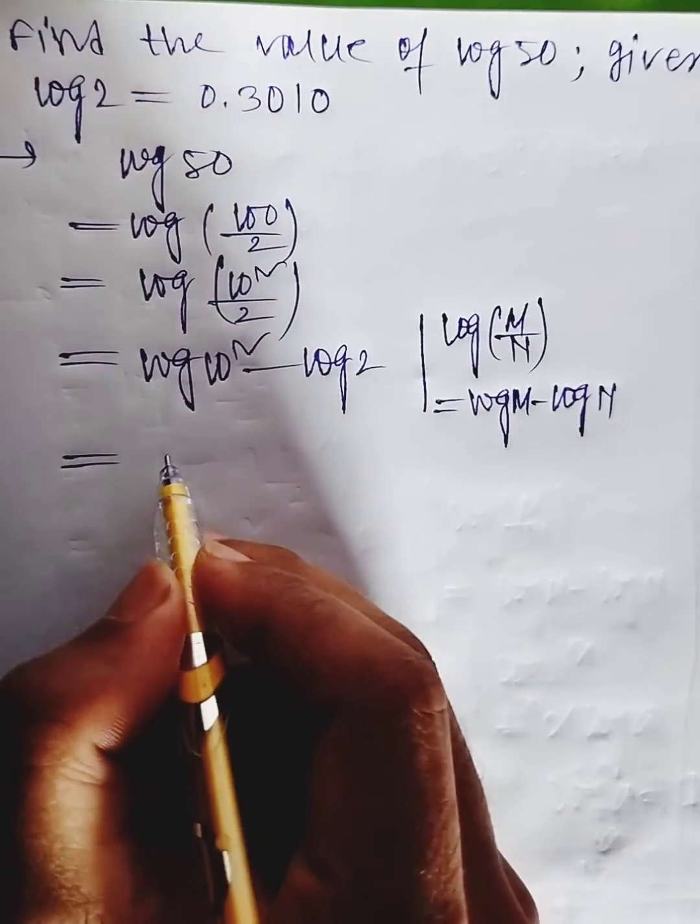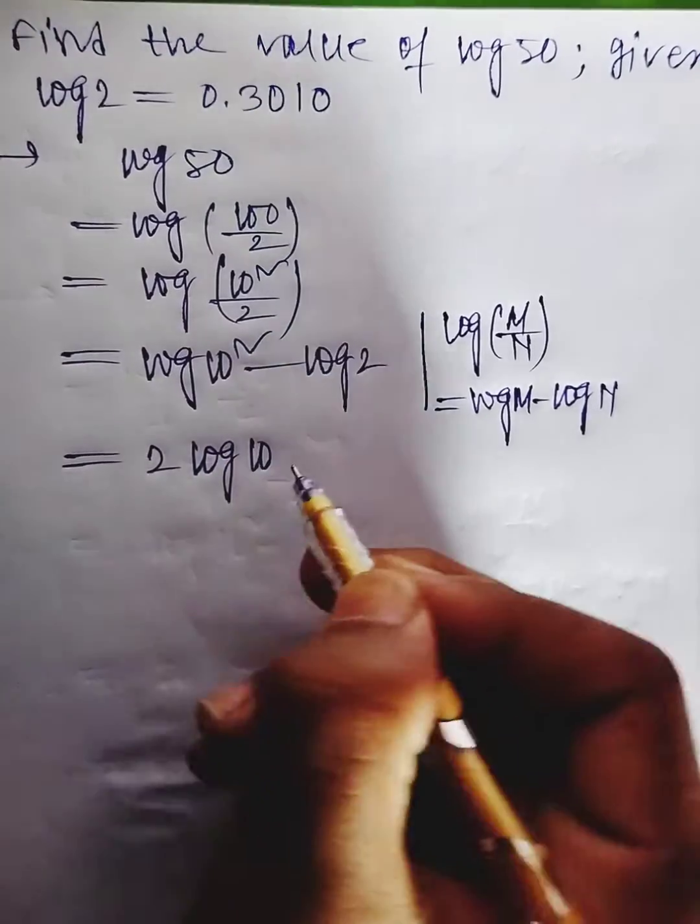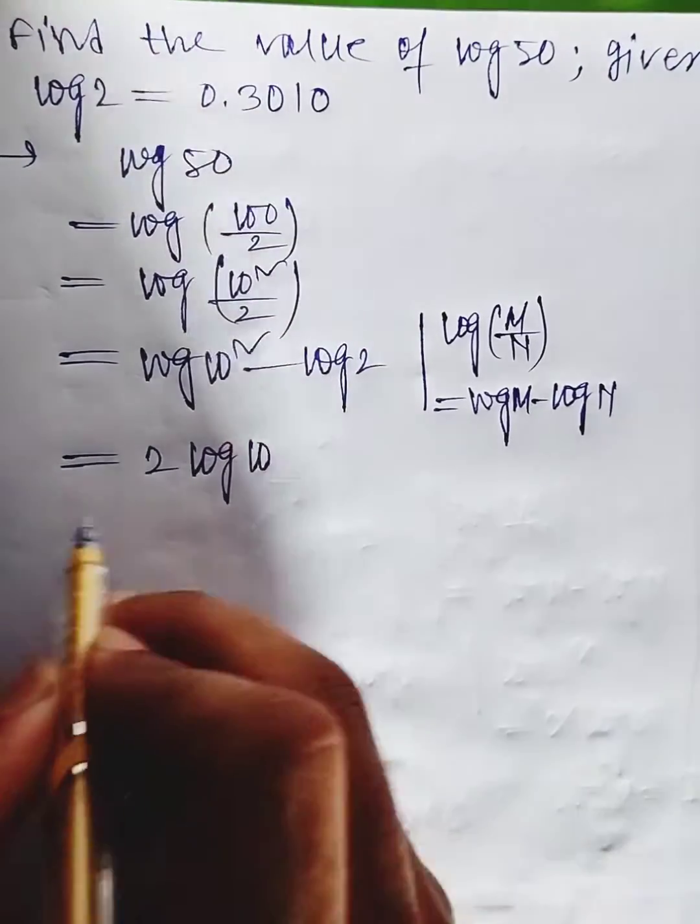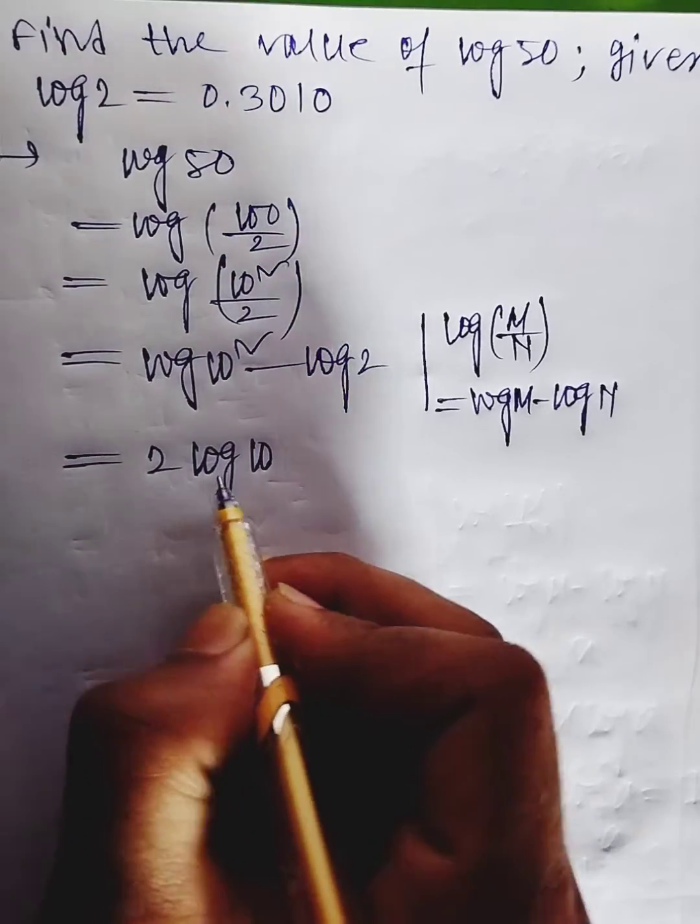We can write log 10 squared as 2 log 10. Here the power comes in front of the log, so this becomes 2 log 10.